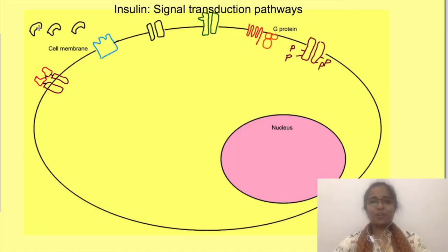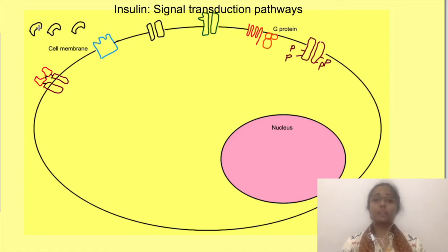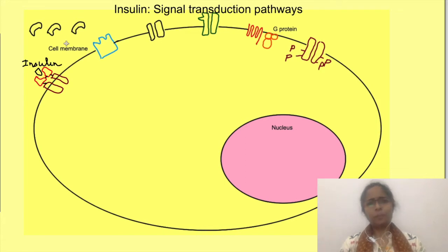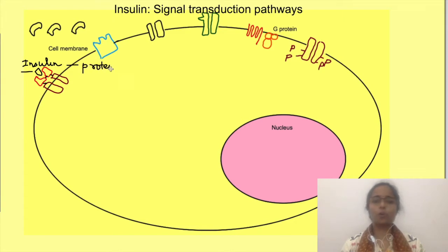Hi, welcome to Physiology Open. In this video we will discuss the mechanism of action of insulin in terms of its signal transduction pathways. Insulin acts by binding to its receptors which are present on the cell membrane of its target cell. Remember that all protein hormones act by binding to cell membrane receptors, and insulin is also a protein hormone.